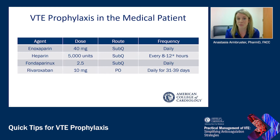Current available agents for VTE prophylaxis in the medical patient include low molecular weight heparins, unfractionated heparin, and one direct oral anticoagulant, rivaroxaban. Standard dosing is included on this slide. We'll also cover renal dosing for each agent.